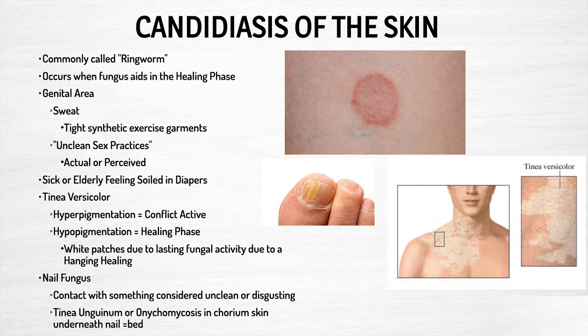Tinea versicolor is where people have blotches of skin that don't have their pigment anymore. During the conflict-active phase there's hyperpigmentation because remember there's thickening of the skin, and then there's breakdown during the healing phase, which is hypopigmentation. If a person is in ongoing conflict activity — conflict and healing, back and forth — the lasting fungal activity and the fungus active in that region trying to break down the tissue cells can eat away at the pigment permanently. So you can have those patches due to a hanging healing. With ongoing conflicts, it can make permanent tissue changes.